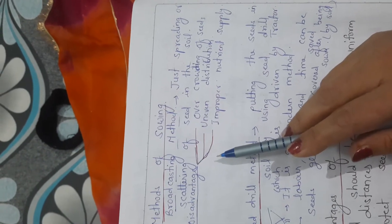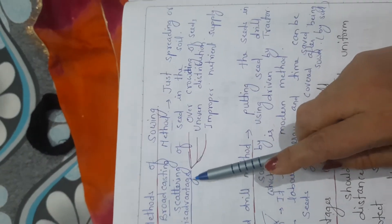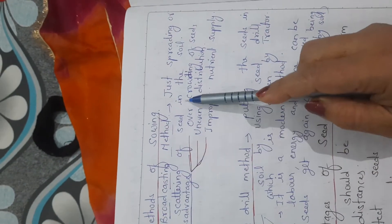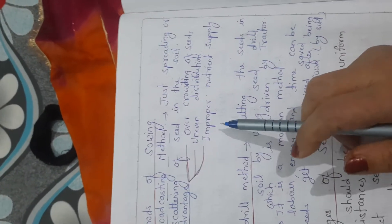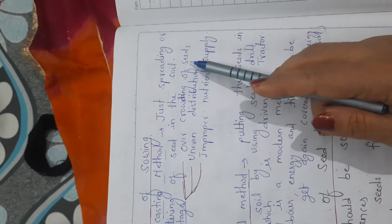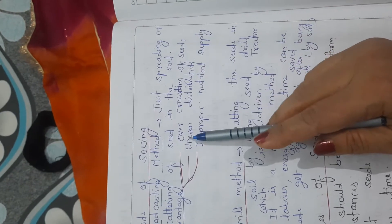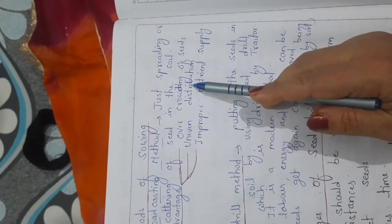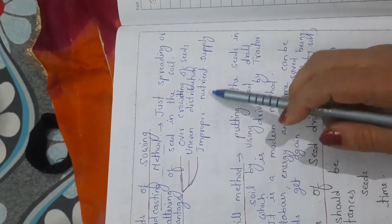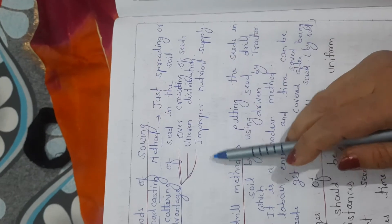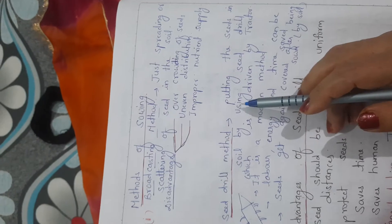This broadcasting method is easy but has some disadvantages, which is why it is not very fruitful. The first disadvantage is overcrowding may occur — if we scatter the seeds, some may get collected at one place, which will affect germination and growth of the crops. There will be uneven distribution, which also affects production, and seeds will not get proper nutrient supply.